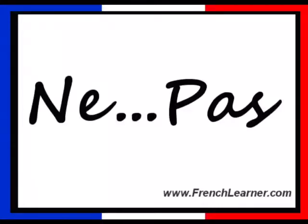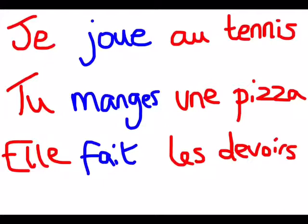In this short video, we're going to see how we can use NE and PAS in French sentences to make negative sentences. We're used to seeing these types of phrases. For example, 'je joue au tennis' — I play tennis; 'tu manges une pizza' — you eat a pizza; 'elle fait les devoirs' — she does the homework. However, sometimes we want to say that someone doesn't do something. In French, we need to use NE and PAS.